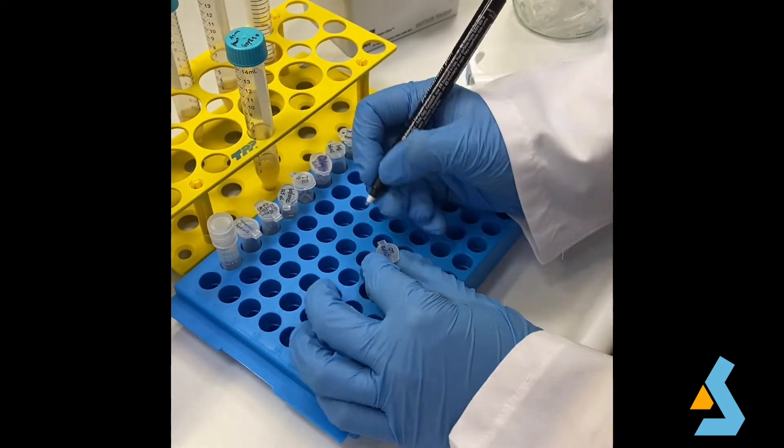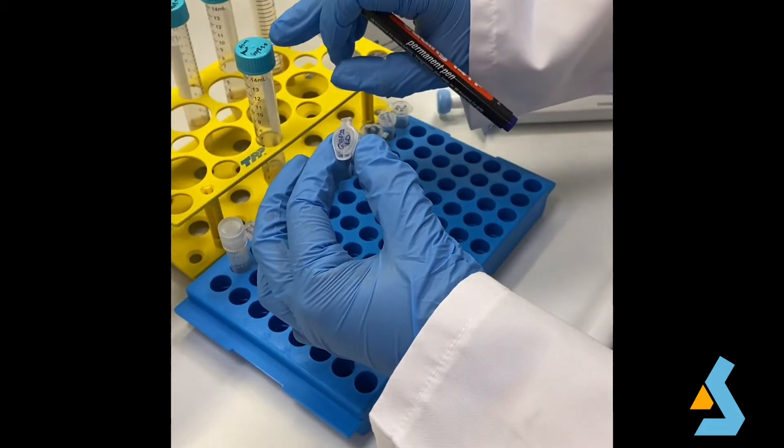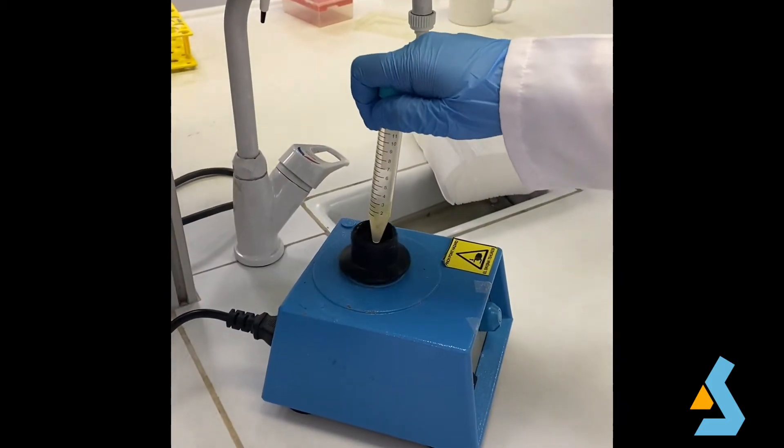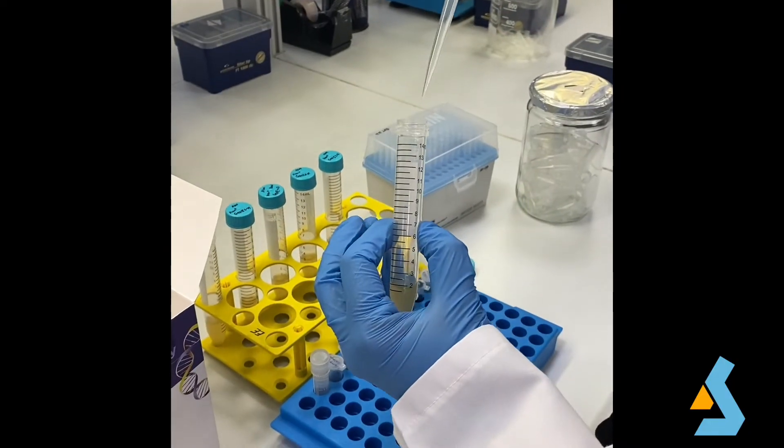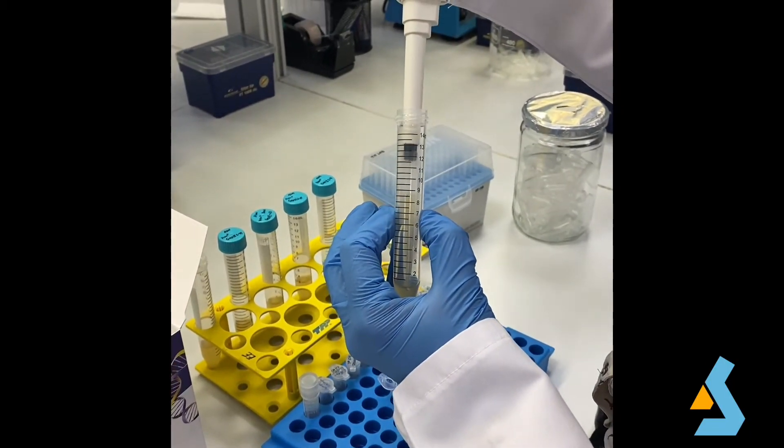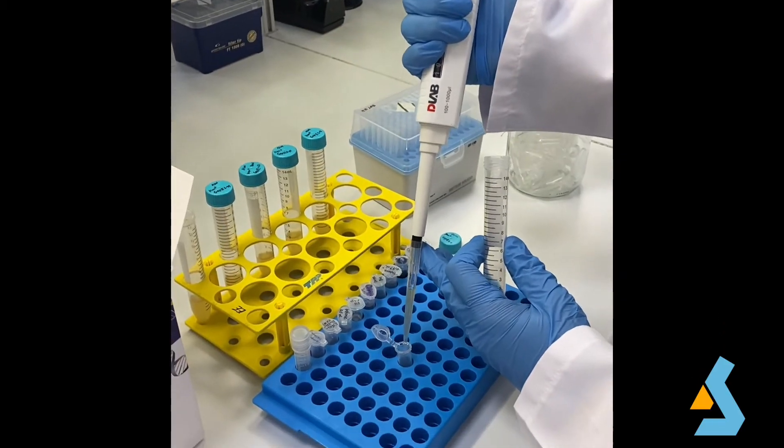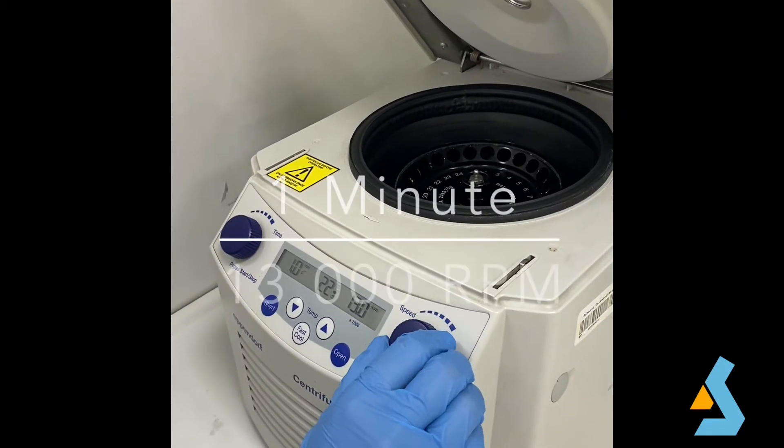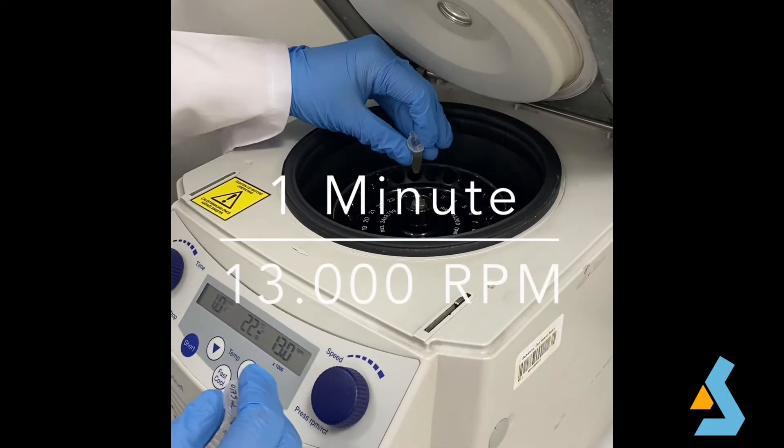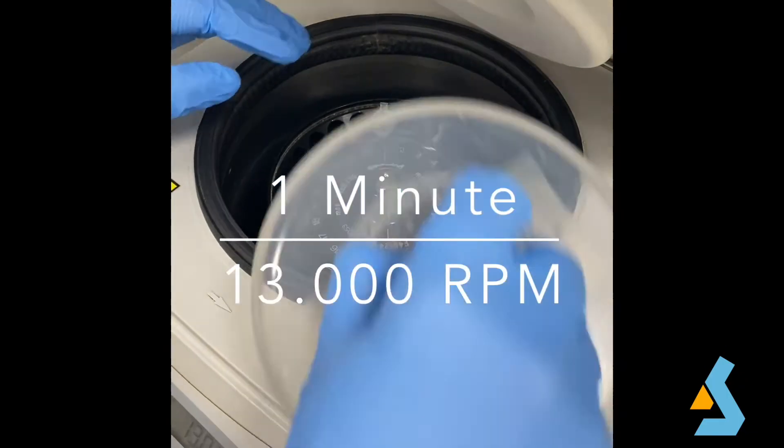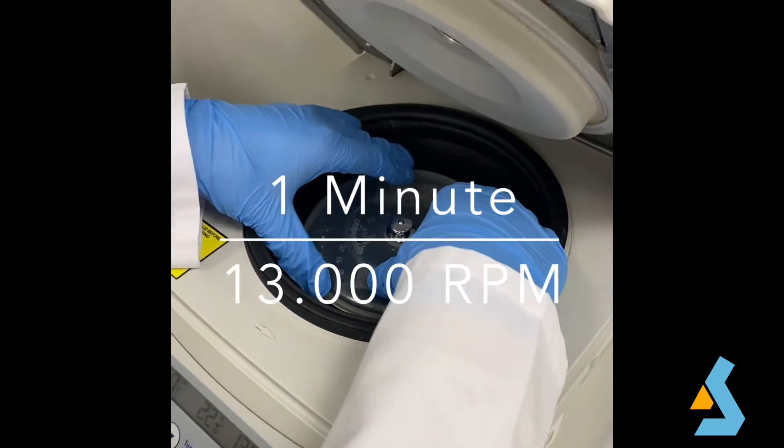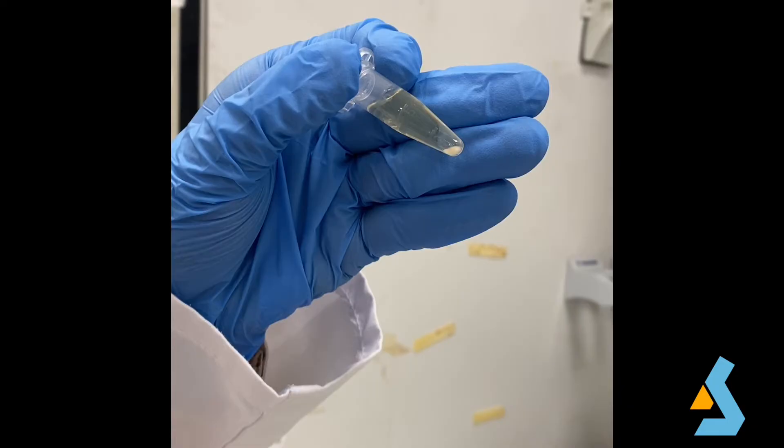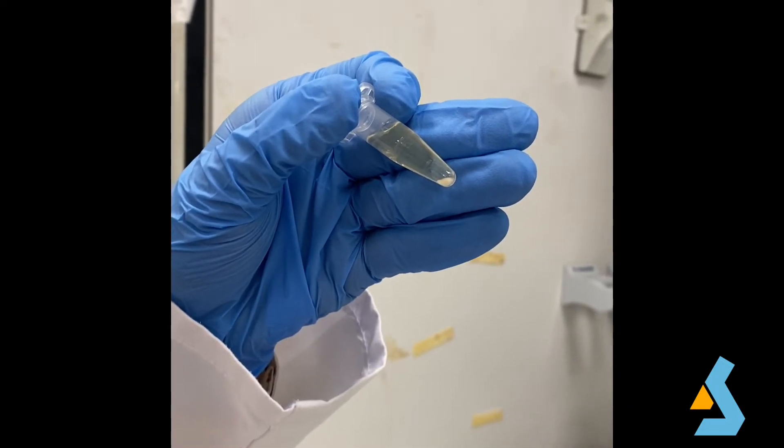Firstly, we need to label a microcentrifuge tube according to the name of the culture. After vortexing the culture briefly, 1 milliliter of bacterial culture is added into this tube. And then the tube is centrifuged for one minute at 13,000 RPM. Following the centrifuge, the pelleted cells are obtained at the bottom of the tube.